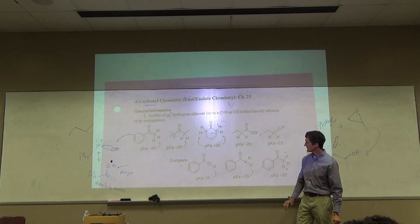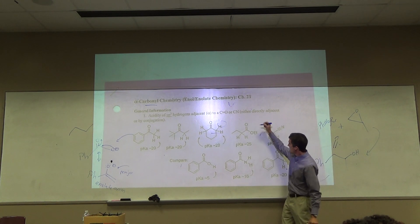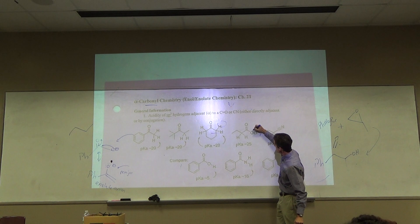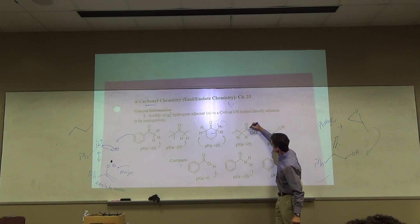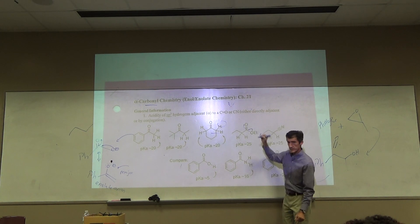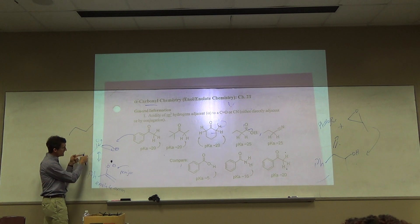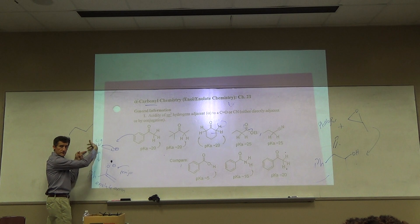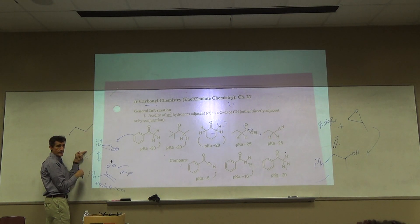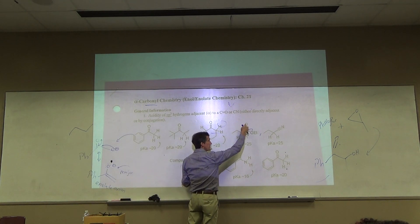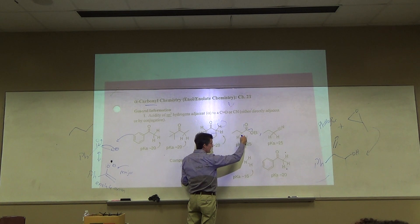Okay. Why is the ester CH, alpha CH not as acidic? Because this has an oxygen over here that's donating. It's pumping electrons into the carbonyl. If you had an oxygen over here pumping electrons into the carbonyl, these electrons are not going to be able to come in here as much.